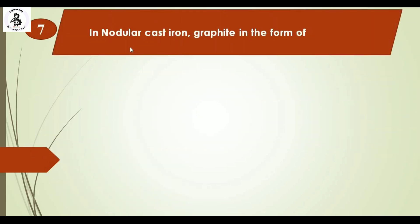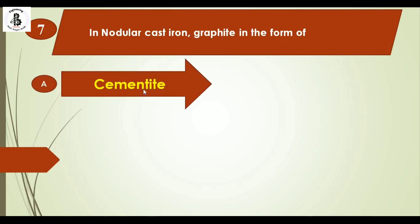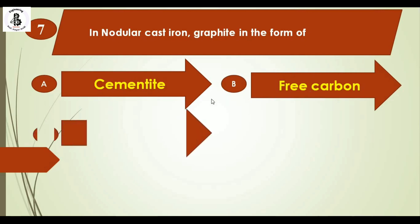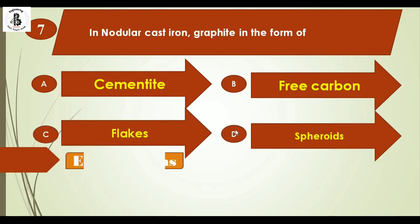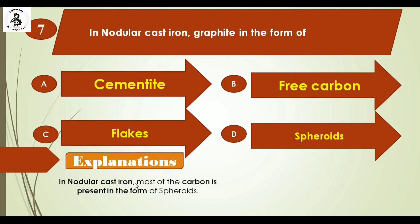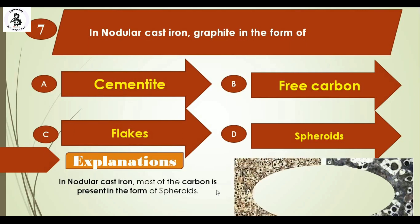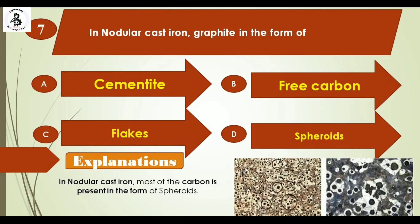In nodular cast iron, graphite is in the form of: option A cementite, option B free carbon, option C flakes, and option D spheroids. In nodular cast iron, most of the carbon is present in the form of spheroids or nodules. These carbons are in the form of nodules, which are round shapes. The right answer is option D, spheroids.